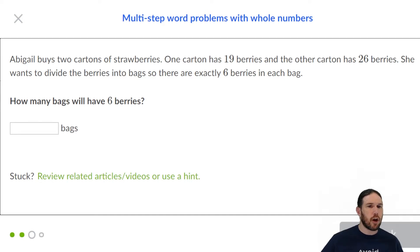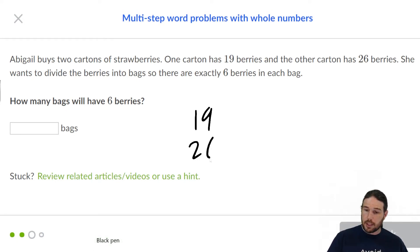Abigail buys two cartons of strawberries. I like this particular kind of problem because unlike some of the math problems that you see involving 397 cantaloupes, at least this one is reasonably realistic. Two cartons of strawberries, one has 19, the other has 26. She wants to divide the berries into bags so that there are exactly six berries in each bag. So this is an addition problem then a division problem.